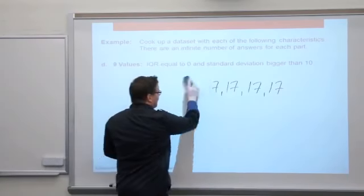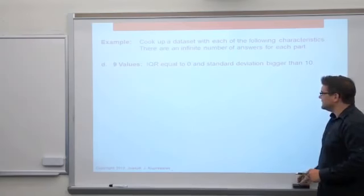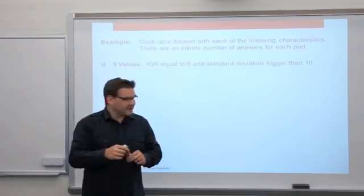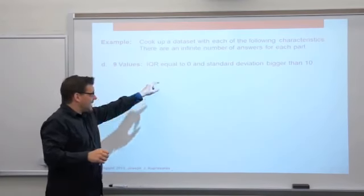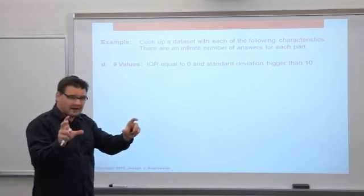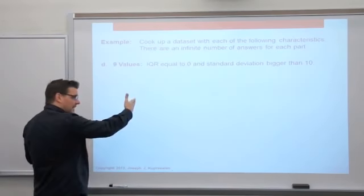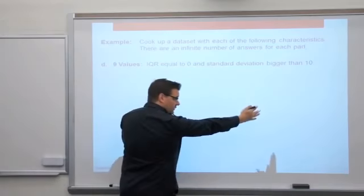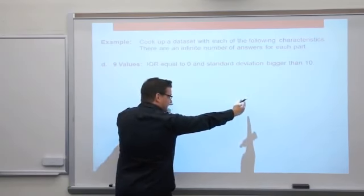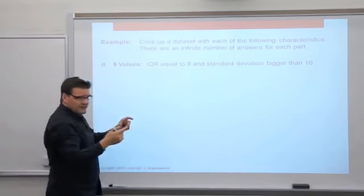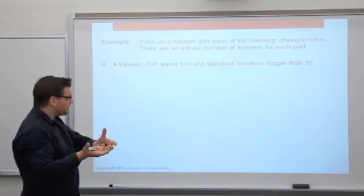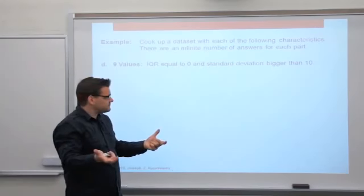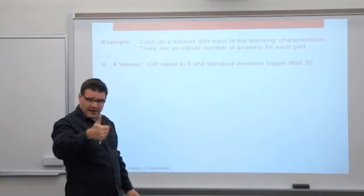Part D: nine values, IQR equal to zero, and standard deviation bigger than 10. A lot of students have trouble with this one. Remember what IQR is — it's the distance between the first and third quartile. If I organize my values from smallest to largest, Q1 is 25% of the way up and Q3 is 75% of the way up. To make IQR equal to zero, all of the data values in the middle need to be the same. To make the standard deviation bigger than 10, throw in an outlier on one end.